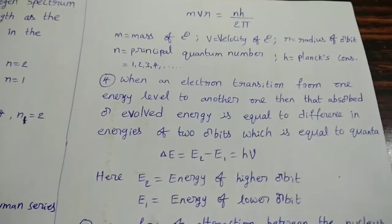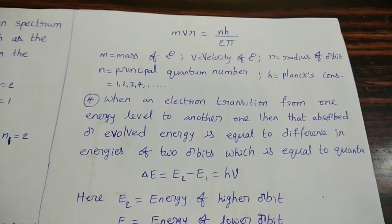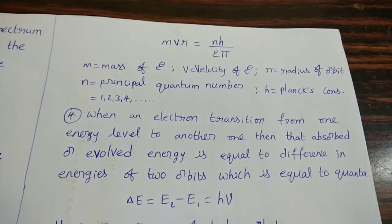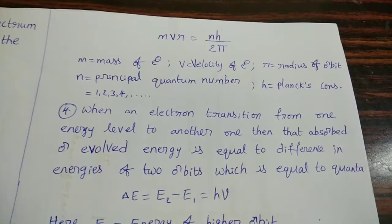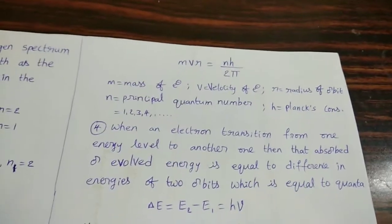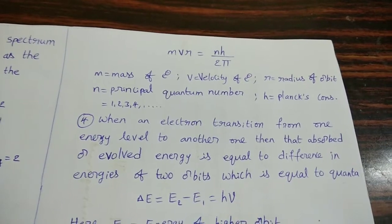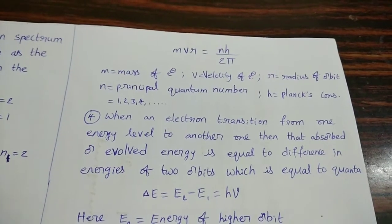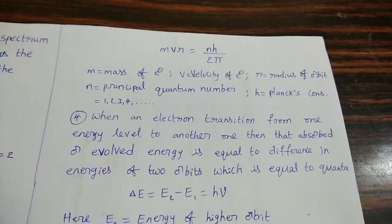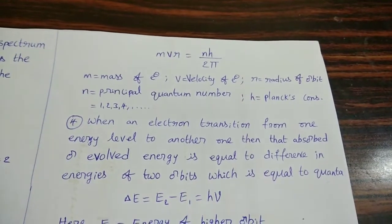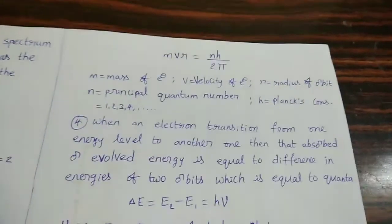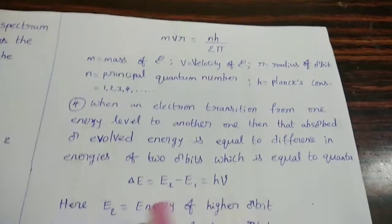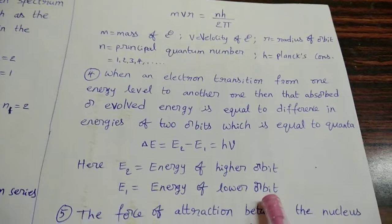When an electron transitions from one energy level to another, the energy absorbed or evolved is equal to the difference in energies of the two orbits, which equals a quantum: ΔE = E₂ - E₁ = hν. When transition occurs from lower to higher energy level, energy is absorbed; in the reverse case, energy is released. E₂ is the energy of the higher orbit and E₁ is the energy of the lower orbit.